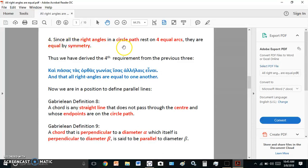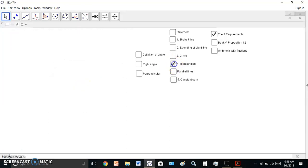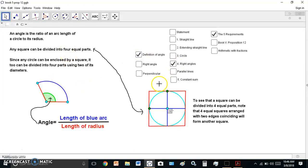And see that I'm actually not assuming anything until I get to 4, which says, since all the right angles in a circle path rest on four equal arcs, they are equal by symmetry. So if we go back here, first I give the definition of an angle here, and I show you that you can divide a circle into four equal parts. And I do this more rigorously in my presentation.